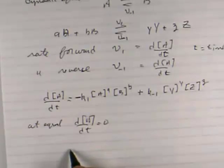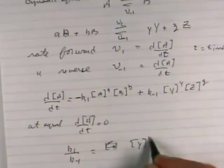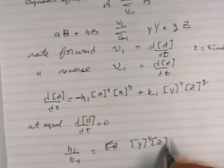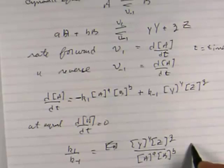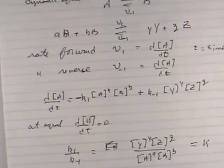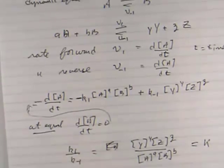And so therefore, what you have is K1 over K minus 1 is equal to Y to the Y, Z to the Z, divided by A to the A, B to the B. And that is equal to K at equilibrium. K is equal to K1 over K minus 1.